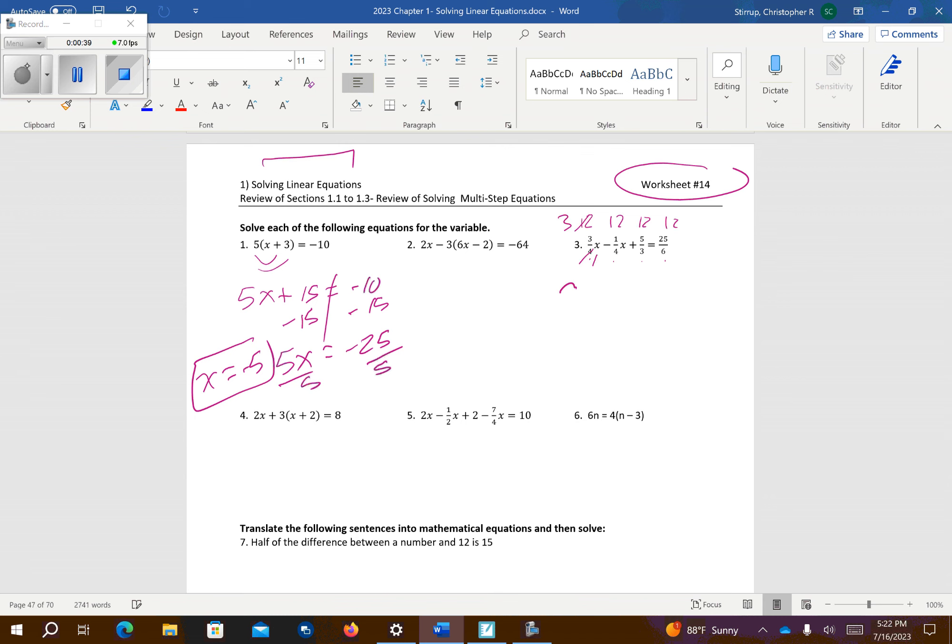So 4 goes into 12 3 times. 3 times the 3x is going to give me 9x minus 4 goes into 12 3 times, so that becomes minus 3x. 3 goes into 12 4 times, 4 times 5 is 20. And then 6 goes into 12 twice, 2 times 25 is 50.